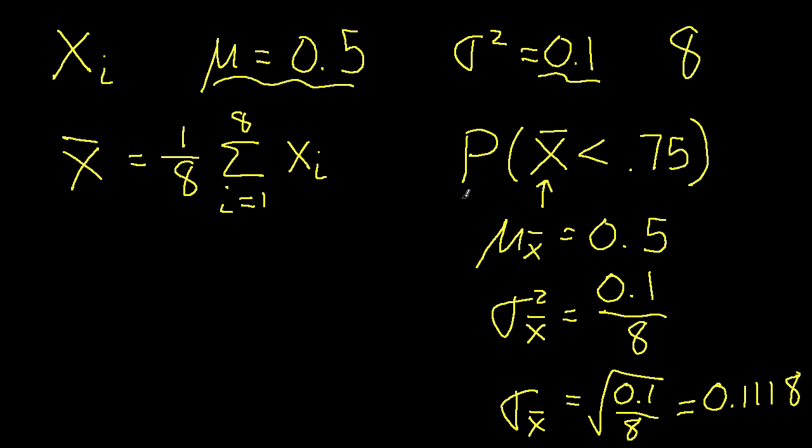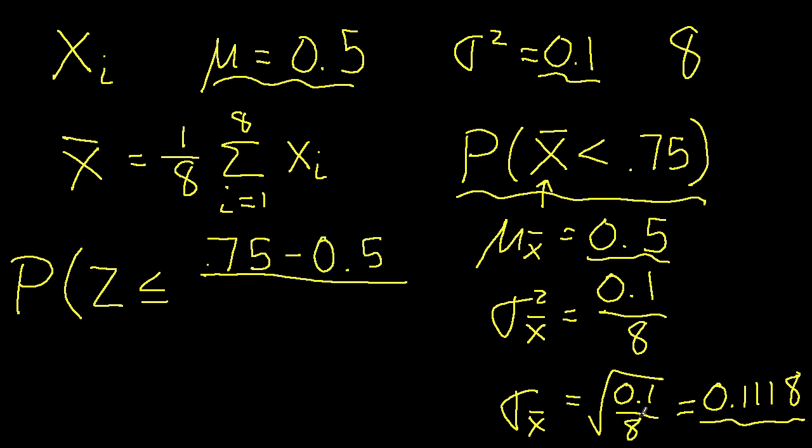So to find this probability, one way to do this would be to just plug this in for the mean, this in for the standard deviation into a function that computes the probability of an arbitrary normal random variable. But typically what you'll see done now is you'll normalize x-bar as follows. You'll say the probability of z, where z is a normalized version of x-bar, being less than or equal to 0.75 minus mu of x-bar, 0.5, over the standard deviation of x-bar, which in this case is 0.1118.